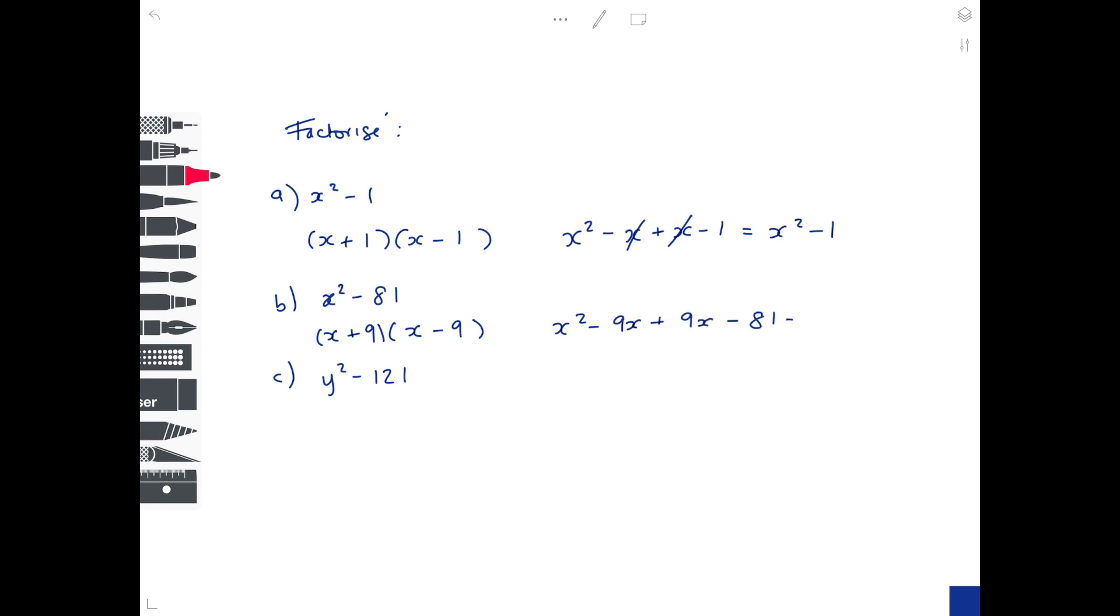And then with our last example we have a y value, so we have two brackets. We're going to have y at the beginning, a plus and a minus. One number is multiplied by itself to reach 121 - well that's 11. So let's work it out and make sure it's correct again. So it's y squared minus 11y plus 11y minus 121 equals y squared minus 121. Yes, it's correct.